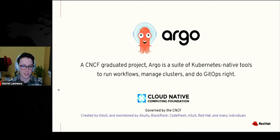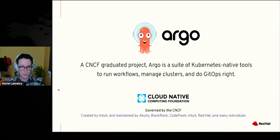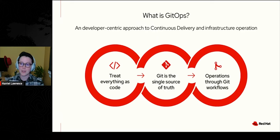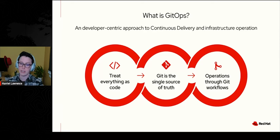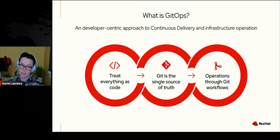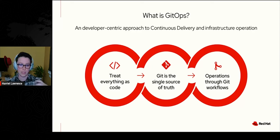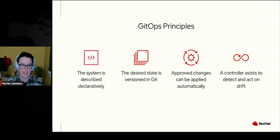At Red Hat, Argo CD is the recommended GitOps engine for application and configuration deployment. GitOps evolved out of DevOps — it takes the DevOps lifecycle, ties it to Git, and adds continuous reconciliation. It's mostly focused on continuous deployment and delivery, but also brings in continuous monitoring, infrastructure as code, and cultural aspects of collaboration and communication.